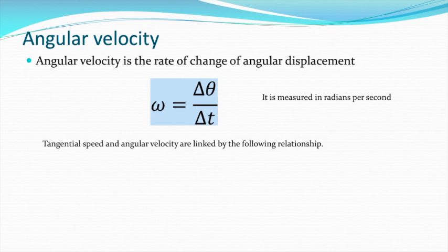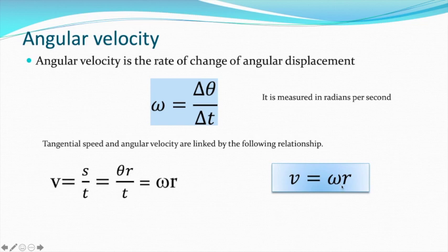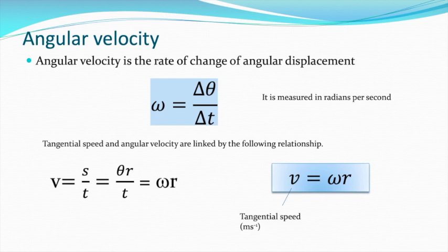Tangential speed is the speed that an object is going at around a circle. And the tangential speed of an object is simply its angular velocity times the radius — v equals omega times R. So if you know what its angular velocity is in radians per second, multiply by the radius and you get the speed it's going at, at a tangent to the circle, in metres per second.